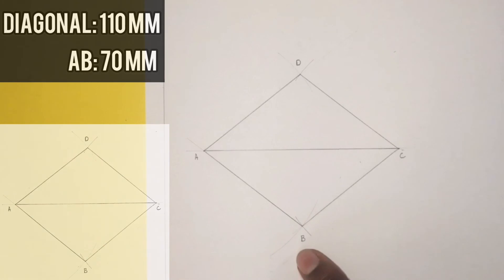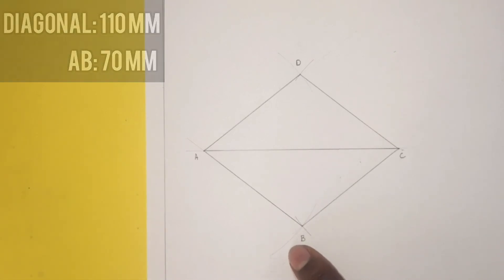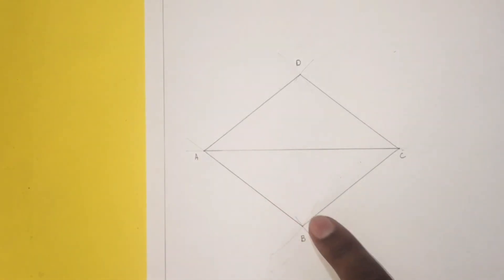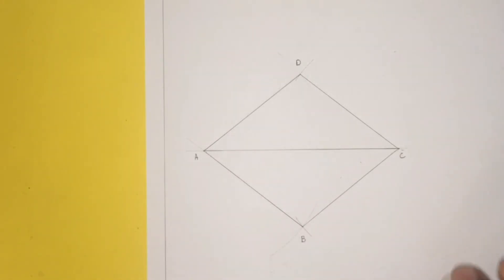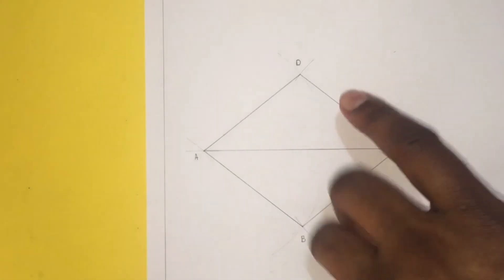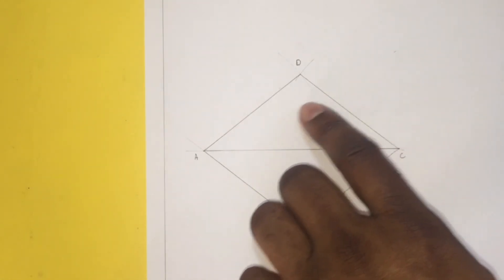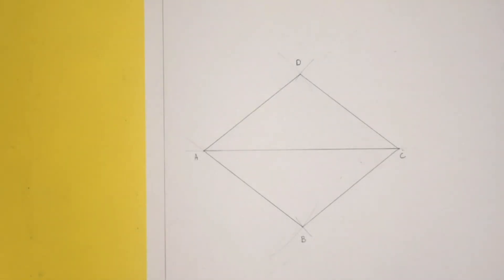However, the difference between the two, the square and the rhombus, is that the internal angles are different, not 90 degrees. So a square, the internal angles are 90 degrees, but for the rhombus, the internal angles are not at 90 degrees. Thanks for watching.